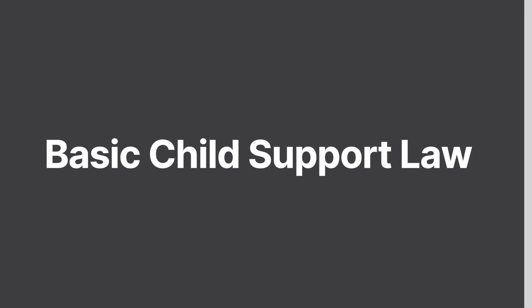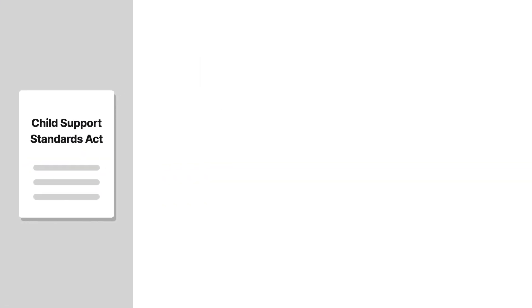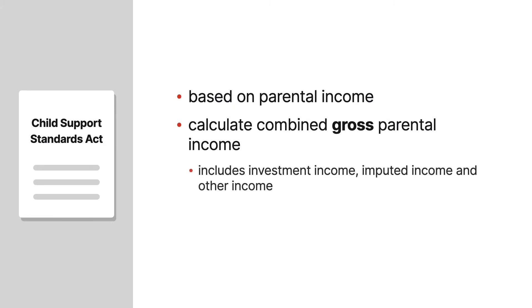Basic Child Support Law. First, we're going to talk about the Child Support Standard Act, which you can find in DRL Section 240 or the Family Court Act at Section 413. When we're talking about child support, it is based on the parental income. You have to calculate your combined gross parental income. Most clients are going to tell you their net income, but you need to find out what their gross income is. You can look at the citations I'm going to have throughout this program.